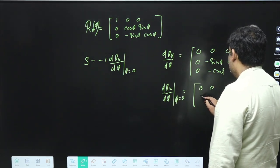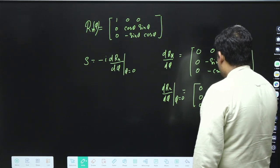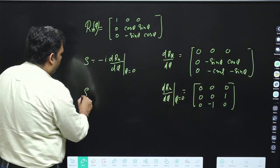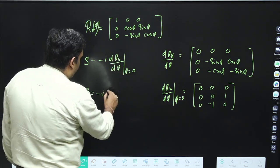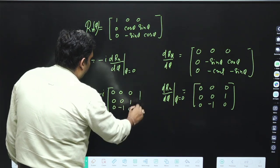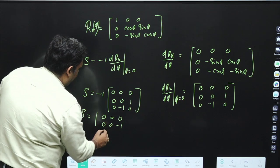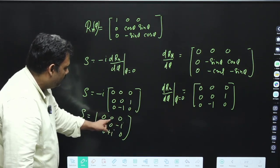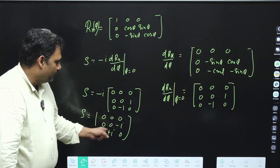So the generator S = -i·dRx/dφ at φ = 0 gives the matrix: first row (0, 0, 0), second row (0, 0, -i), third row (0, i, 0). If you look at the 2×2 block in the lower right, it is nothing but a Pauli spin matrix. This shows how you can obtain the generator of a Lie group from its matrix representation.